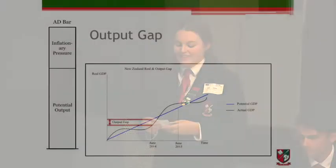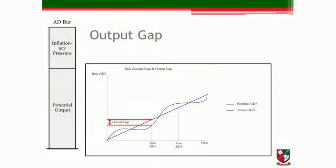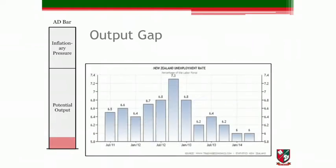The output gap is the difference between GDP and potential GDP. New Zealand's output gap is currently negative and small, as the economy emerges out of the recession. We know this as the unemployment rate, which is an indicator of spare capacity, is still moderate at 6%, although it has declined from its 7.3% peak. The output gap will contribute to a small amount of potential output.